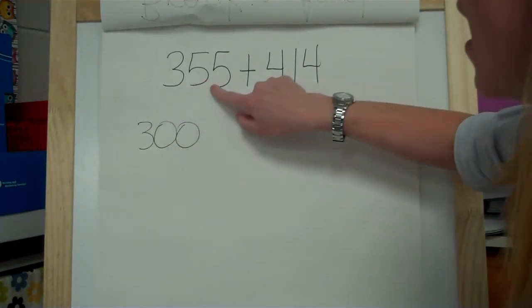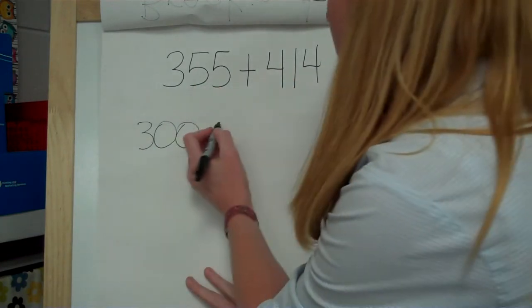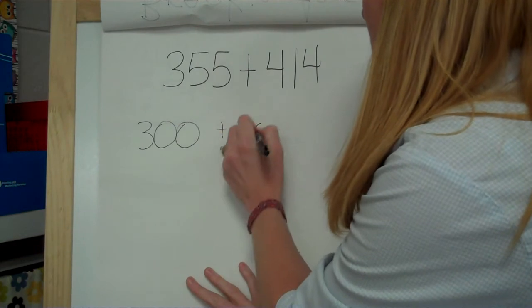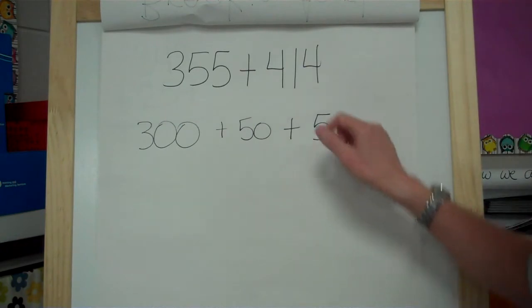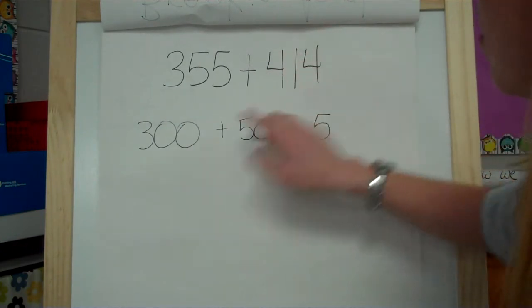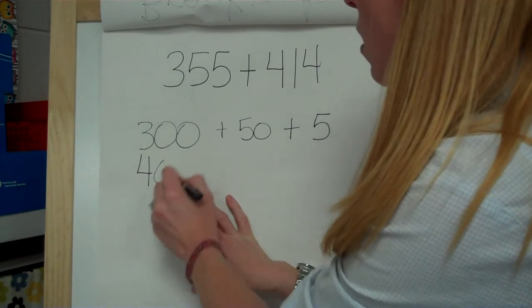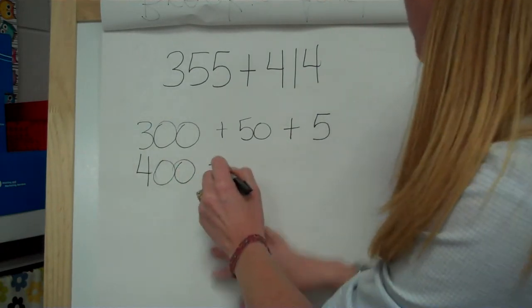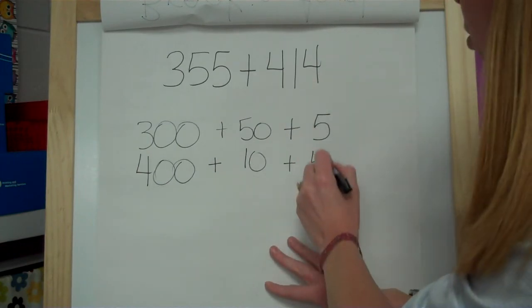Now the 5 in the tens place is worth 50, and then this 5 in the ones place is worth 5. Alright, so now I'm going to do the same thing to this number and I'm going to kind of line them up. So we've got the 4 is worth 400, the 1 is worth 10, and then the 4 is worth 4.